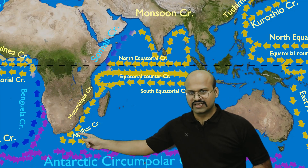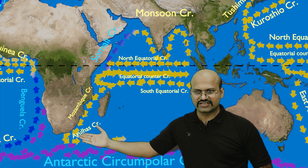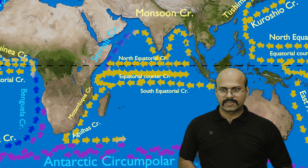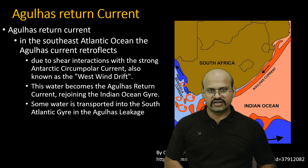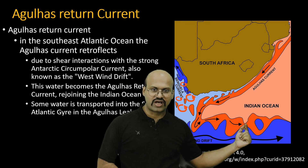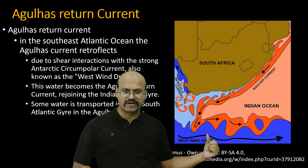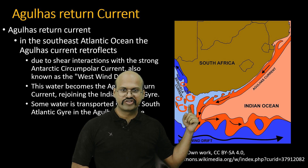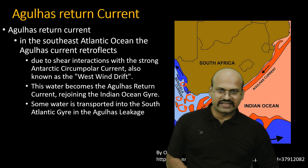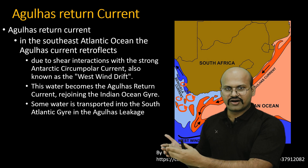The Agulhas current turns back because of the high wind velocities of the Westerlies and the Antarctic Circumpolar current. This turning back is called the Agulhas return current. The Antarctic Circumpolar current is also called the west wind drift. Eddies formed here enter into the Atlantic Ocean — for example, the Benguela current — showing there is an exchange of water from the Indian Ocean towards the Atlantic Ocean.